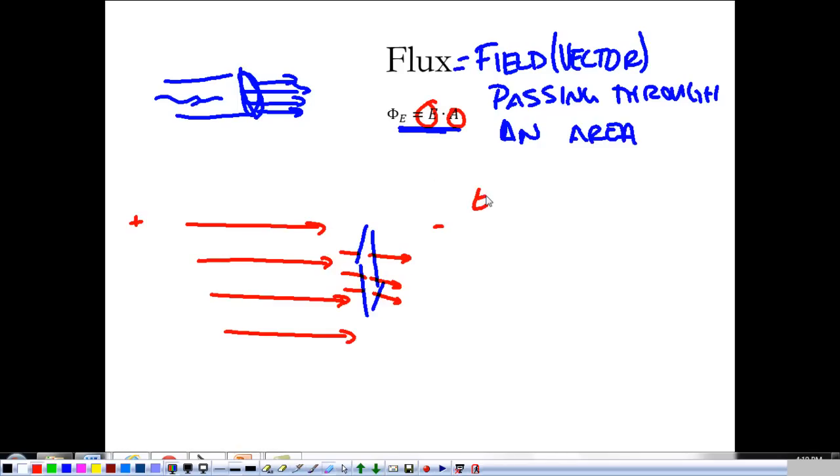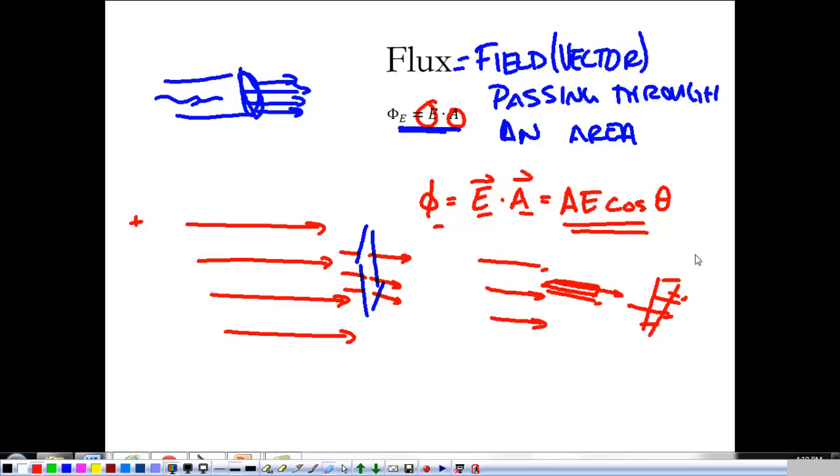It's important that we note that this E dot dA thing, E dot A, when we talk about flux this way, that's the dot product. So we're concerned with how my area vector and my electric field vector are related to one another. A non-vector way to write this is the magnitude of my area times the magnitude of my electric field times the cosine of the angle separating those two things: A, E, cosine theta. That tells me how much of that field is passing through the area.